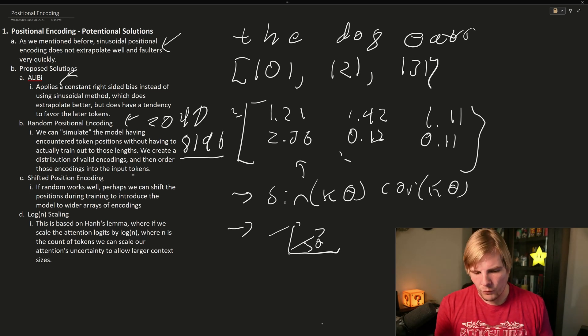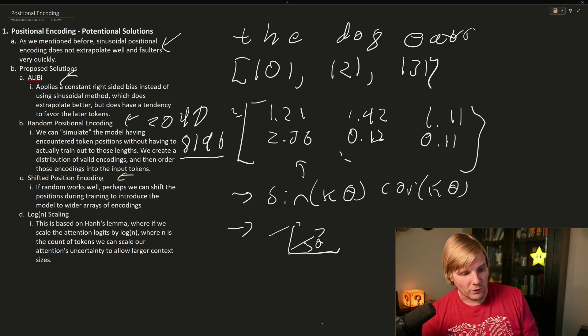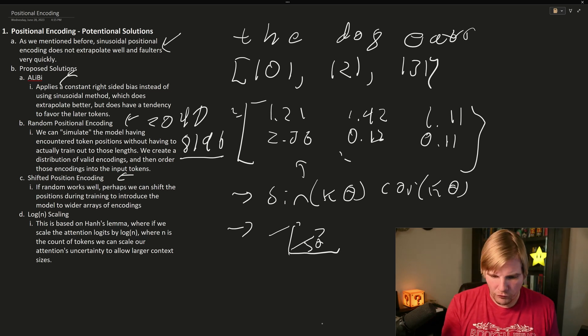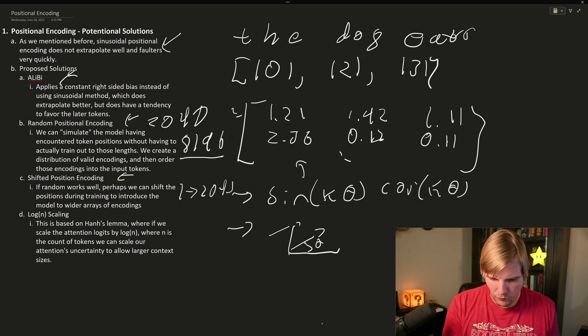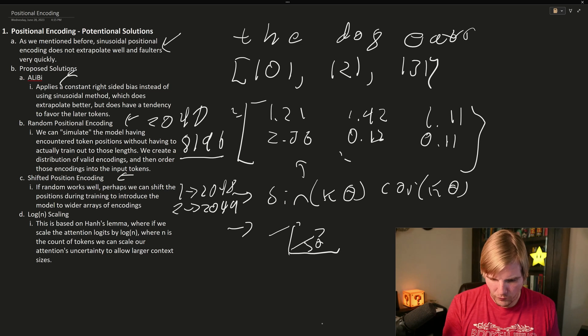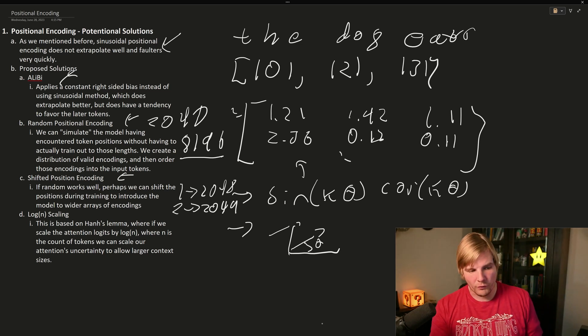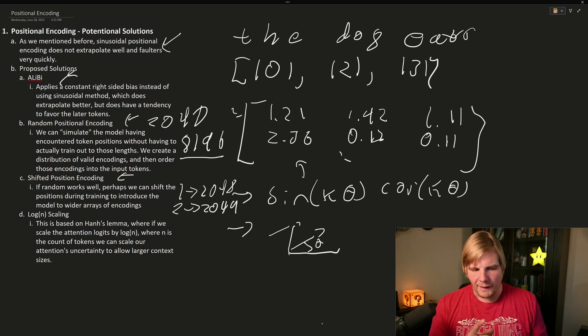This led naturally to shifted positional encoding, where I start by using encodings between 1 and 2048. But then in the next round, I use 2 to 2049, and then 3 to 2050, and so forth. And this also helped the model to correctly learn what these positional encodings are. And I think this gives a hint to what's actually happening.